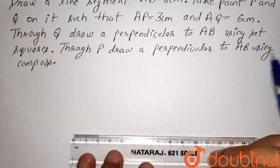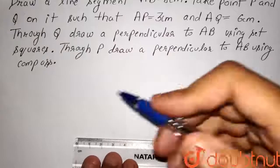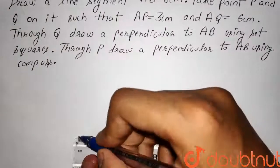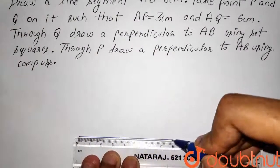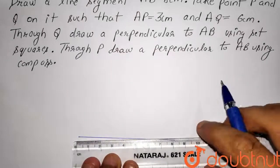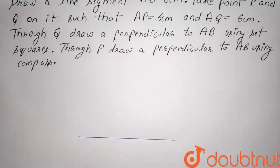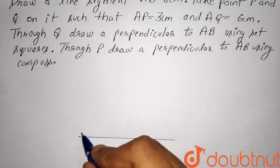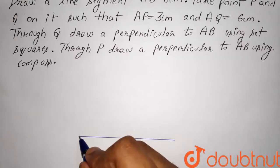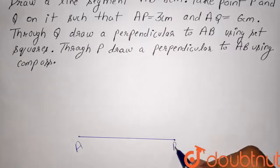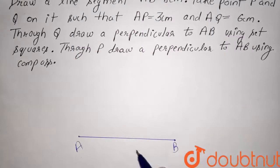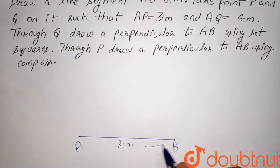So, firstly, we will draw a line segment AB. Let this point be A and this point be B, 8 cm.